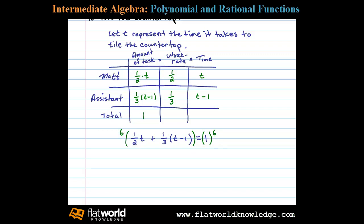And that'll leave us with 3t plus 2 times T minus 1 equals 6. And so this is linear, we have 3t plus 2t minus 2 equals 6, 5t minus 2 equals 6, or 5t equals 8.